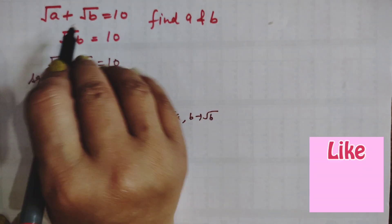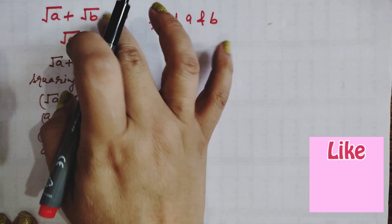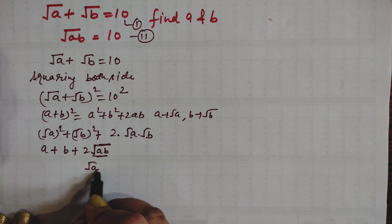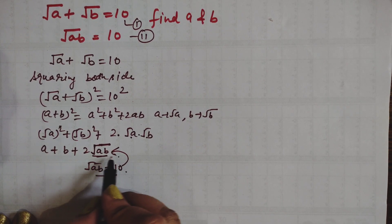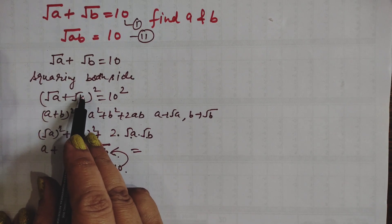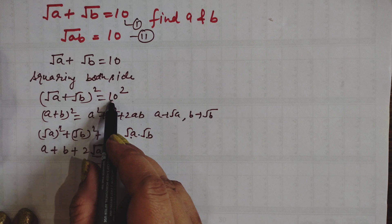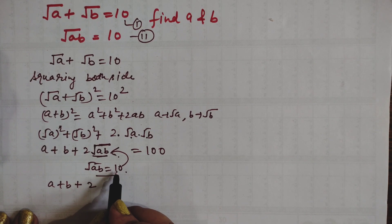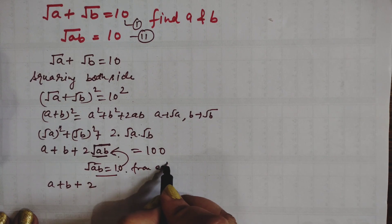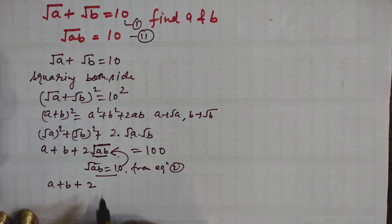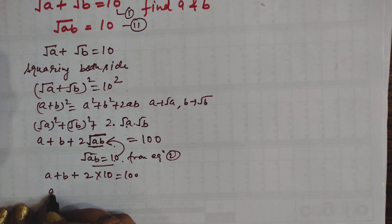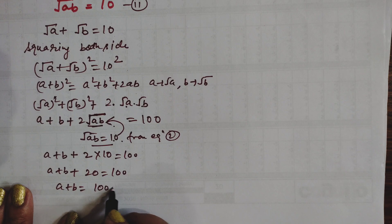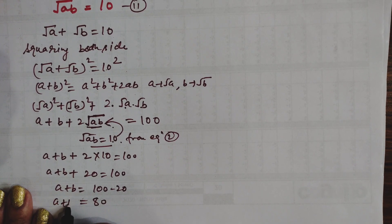These two are the given equations. We consider the first and second equations. The second equation gives root of AB equals to 10. Substituting on the right-hand side, we use the identity and get 10 squared equals 100. So A + B + 2·10 equals 100, meaning A + B + 20 = 100, giving A + B = 80.